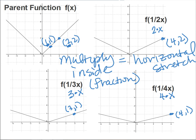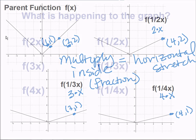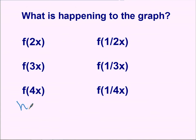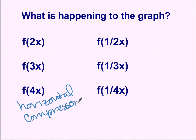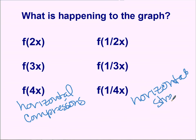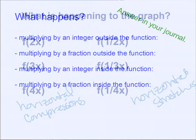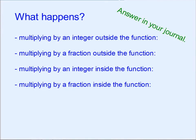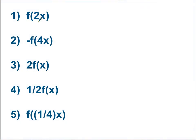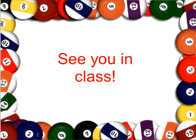So multiplying inside the function by a fraction leads to a horizontal stretch, while multiplying inside by integers gives horizontal compressions. Make sure to bring any questions — we'll talk about this page in class. Have a great day and I'll see you next time.